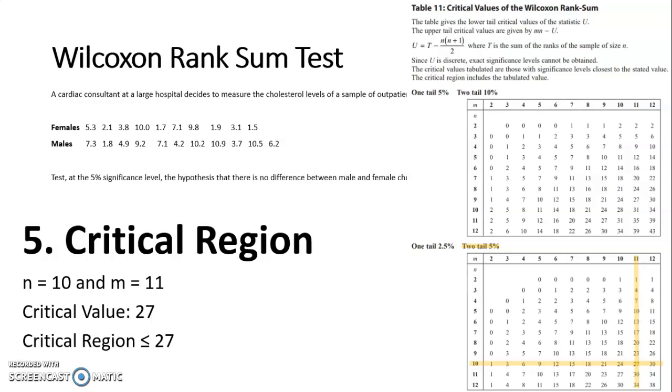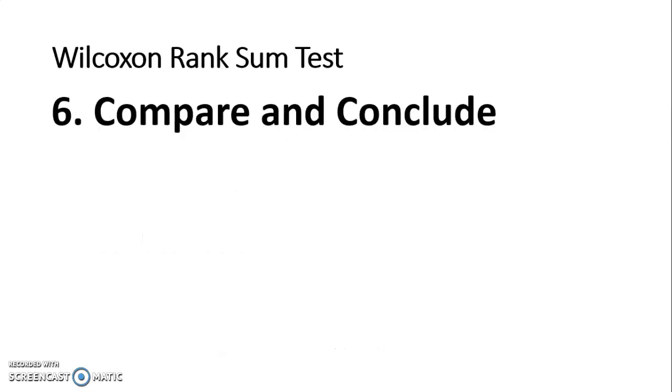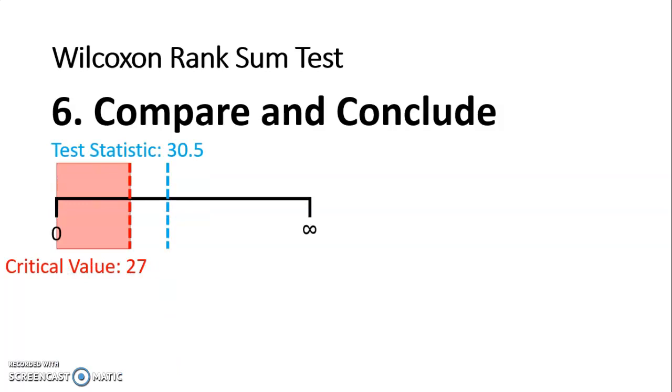Finally we come to compare and conclude. This is a distribution free test so there is no normal curve. I'm just going to draw myself a line from zero to infinity and then like we have done on the Wilcoxon tests I draw a line where my critical value would be, at 27. Anything less than or equal to that is the critical region, the reject zone. 30.5 is above that, hence we accept H0.